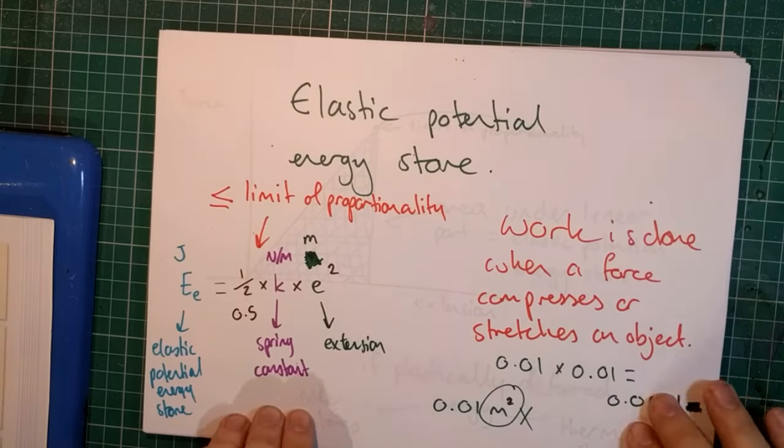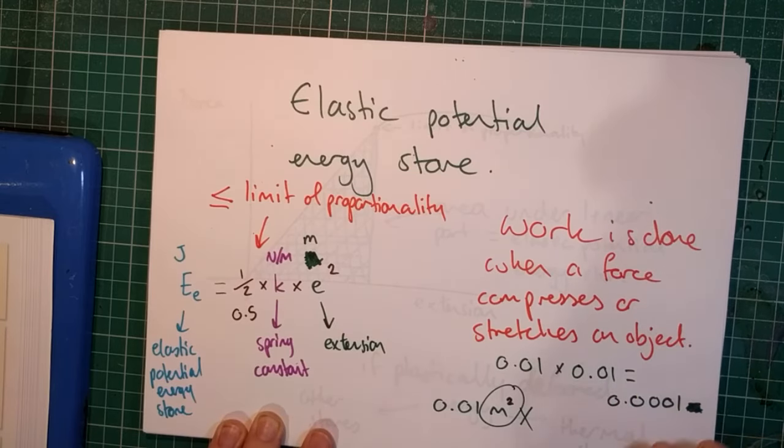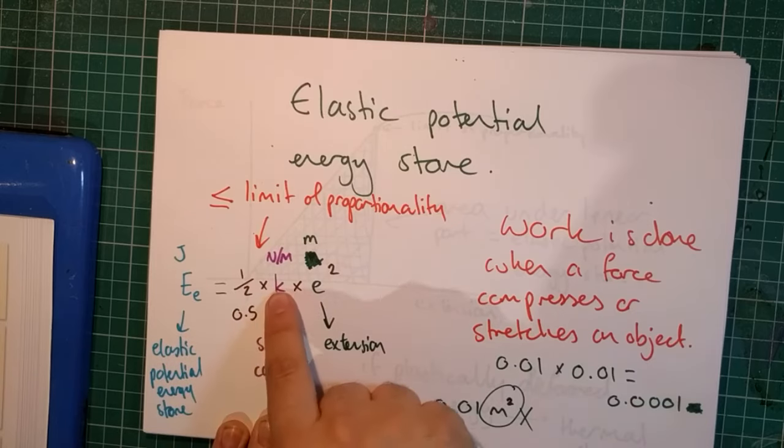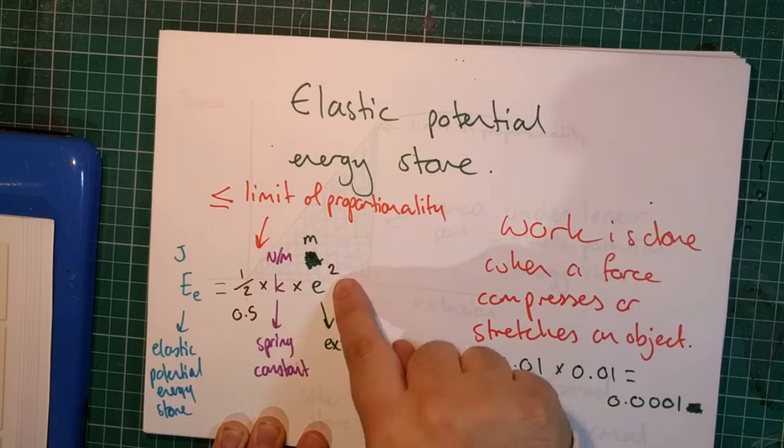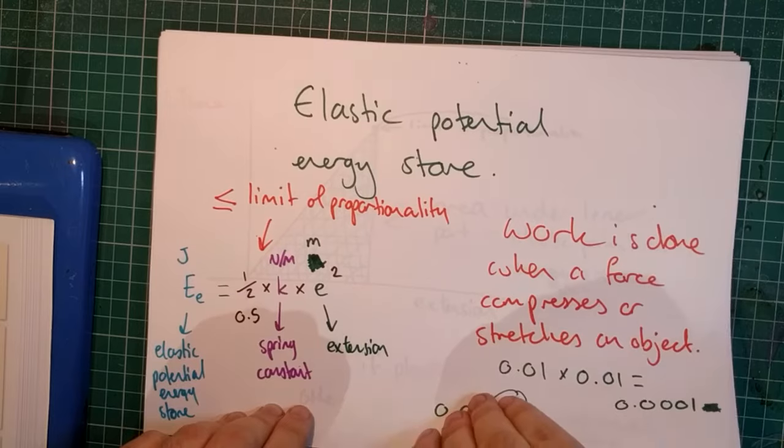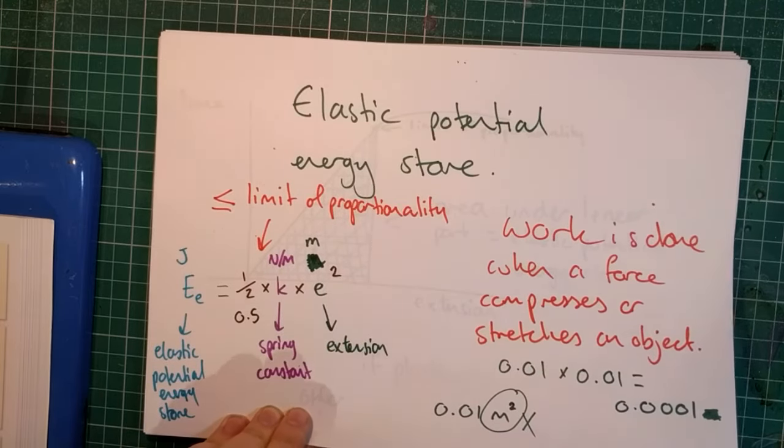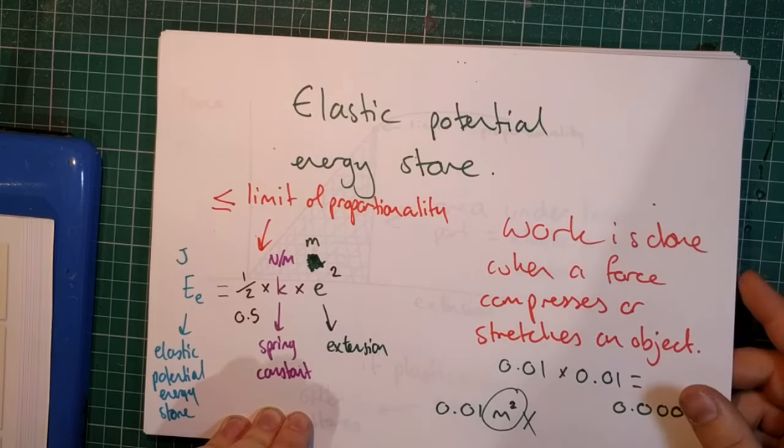That's the equation for the elastic potential energy store. The elastic potential energy equals half times the spring constant times the extension squared. You'll notice it's quite similar in form to the kinetic energy equation, which you will have seen previously.